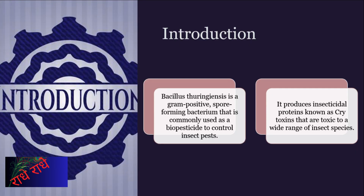Bacillus thuringiensis, or Bt, is a naturally occurring bacterium that has been utilized in agricultural pest control for many years. Bt possesses the capability to produce insecticidal proteins, known as cry toxins, which have the potential to be toxic to a variety of insects. These toxins are applied to preserve crops from hazardous pests, while staying innocuous to humans and other animals.